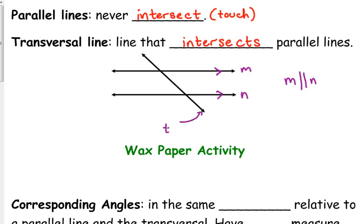That's the notation that those two lines are parallel to each other. And this would be our transversal right here. It cuts through those parallel lines, and you can see that it creates some angles there. Now, we're going to look at some relationships between these angles.